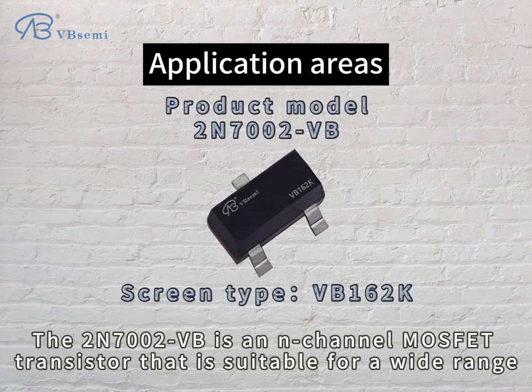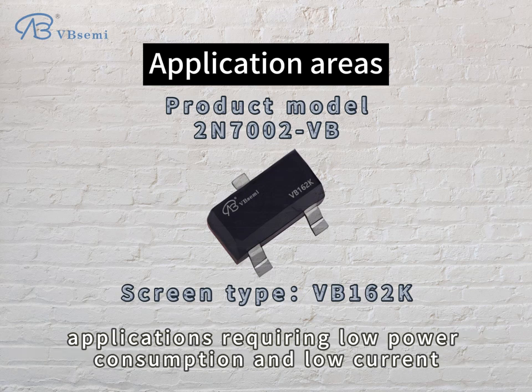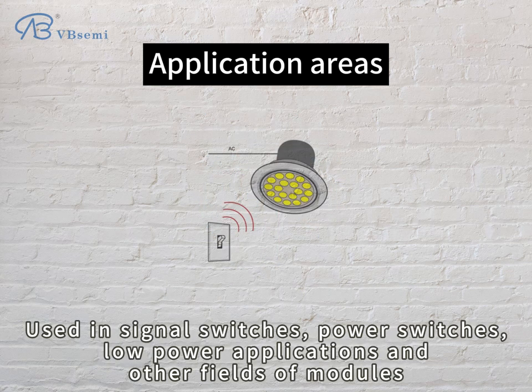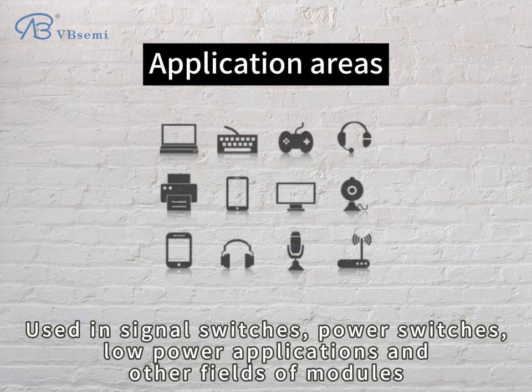The RN700VB is an N-channel MOSFET transistor suitable for a wide range of electronic devices and applications with low voltage and low current characteristics. It is used in signal switches, power switches, low power applications, and other module fields.